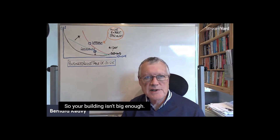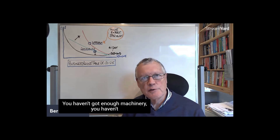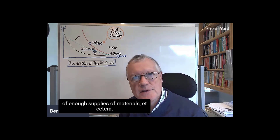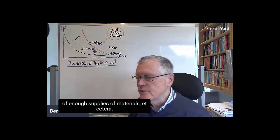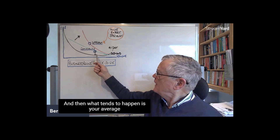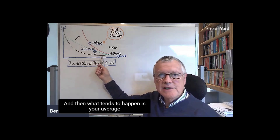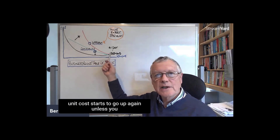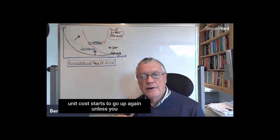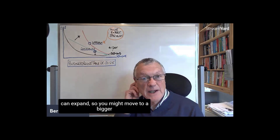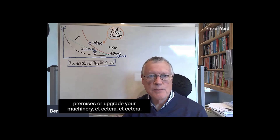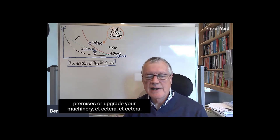Until you get to a certain stage where you start running out of capacity — your building isn't big enough, you haven't got enough machinery, workforce, or supplies of materials — and then your average unit cost starts to go up again, unless you can expand by moving to bigger premises or upgrading your machinery.